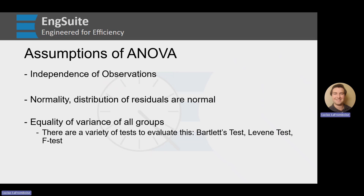There are some assumptions of ANOVAs that we have to meet first. The first is independence of observations. That just means that each of our measurements is independent of others — they would be measuring different parts for the same dimension. We're not measuring the same dimension on the same part over and over.